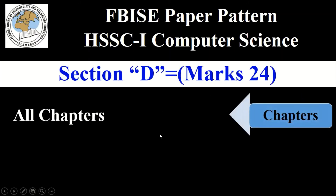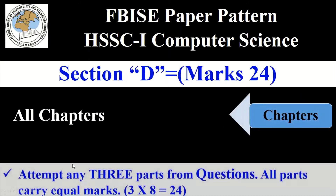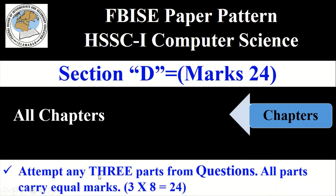To get 24 marks in Section D, you have to attempt any three questions from the given questions. All questions carry equal marks — each question has eight marks. So three multiplied by eight equals 24. In this way you can get 24 marks in Section D.